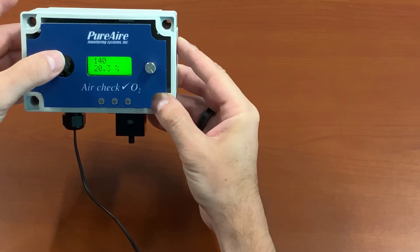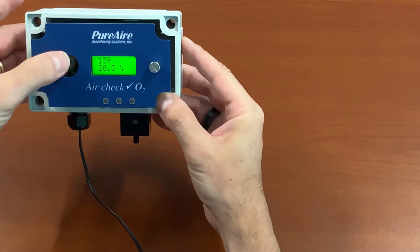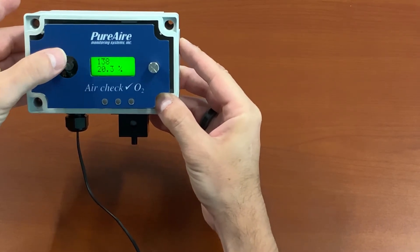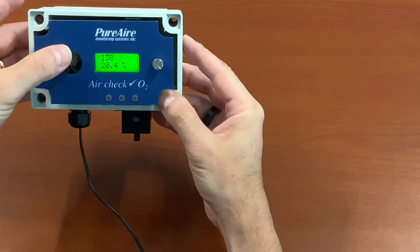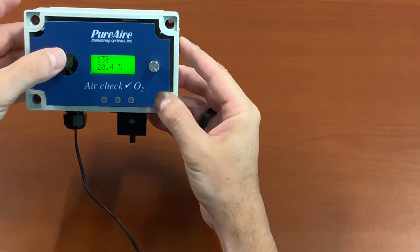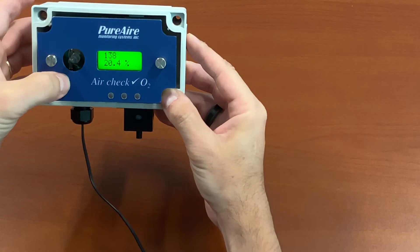you have to decrease the number. So we're going to hold down, and for every two to three counts that you go down, you're going to see your oxygen reading go up a tenth of a percent.